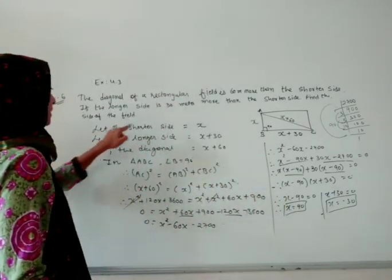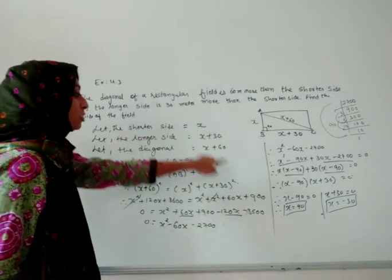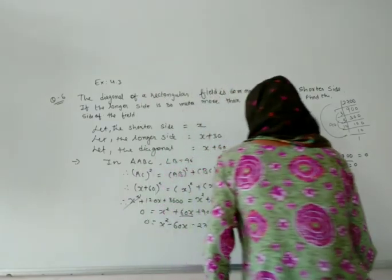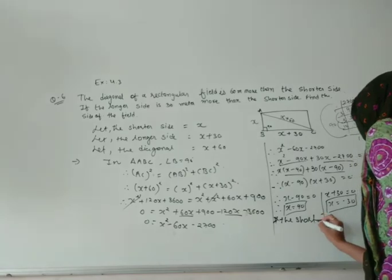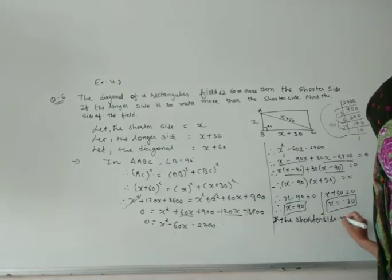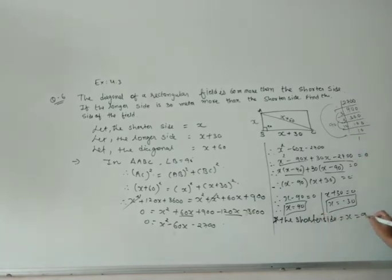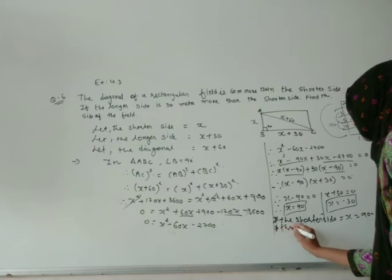Here what we got: the shorter side we guessed as x, so x is 90. The shorter side, that is in the form of x, is now 90 meters according to the question.